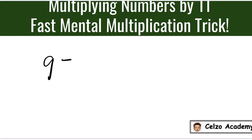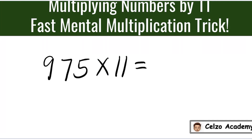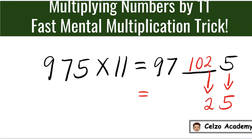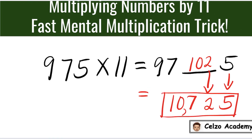Now let's have 975 times 11. The first step is to write down 97, space, and then 5. Adding 97 and 5, we get 102. To write the final answer, we bring down the 5, copy the 2, and now we add 97 plus 10, which is 107. So the answer is 10,725.